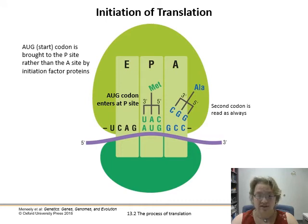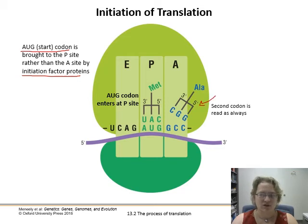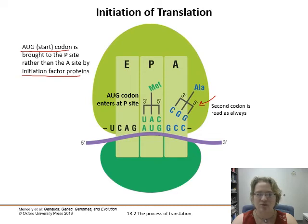Starting all this is where we need our start codon AUG. When that comes into the aminoacyl site, it moves to the peptidyl site — it kind of skips right along, thanks to initiation factor proteins. Then the second codon comes in and starts. This methionine and its tRNA is the only one that jumps the gun and moves to the peptidyl site without the initial bond being made — that'll happen with the next amino acid to come.